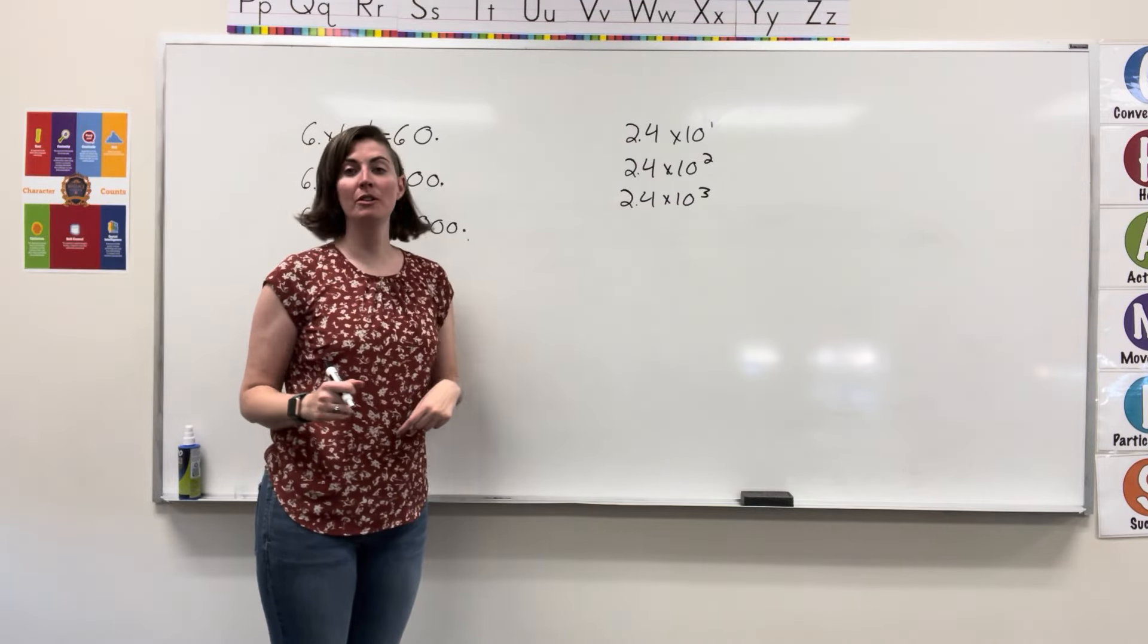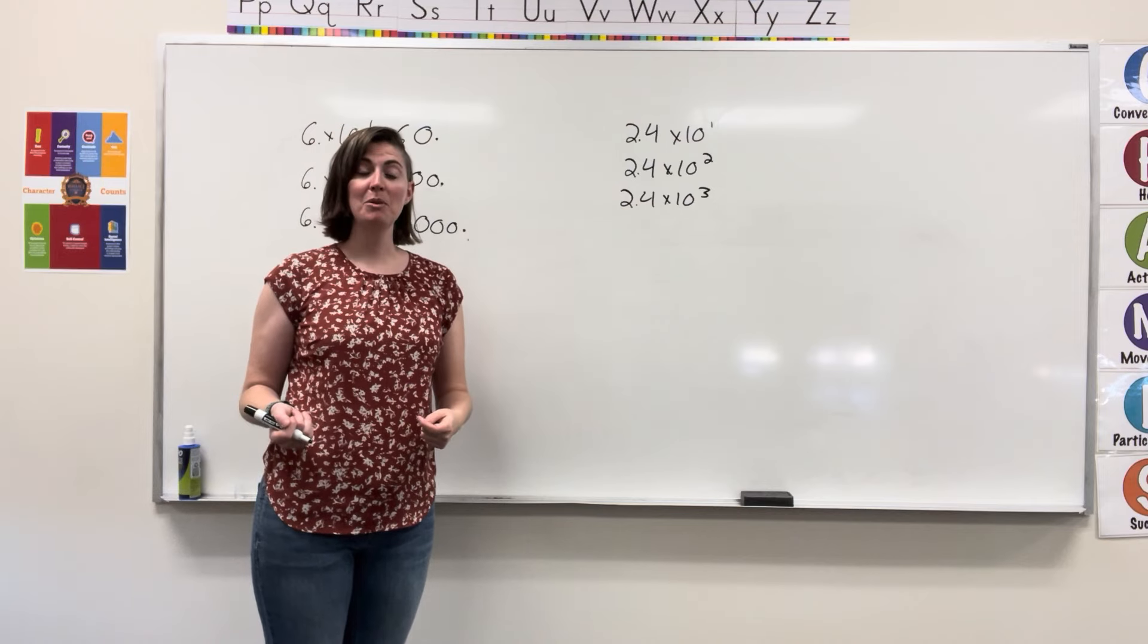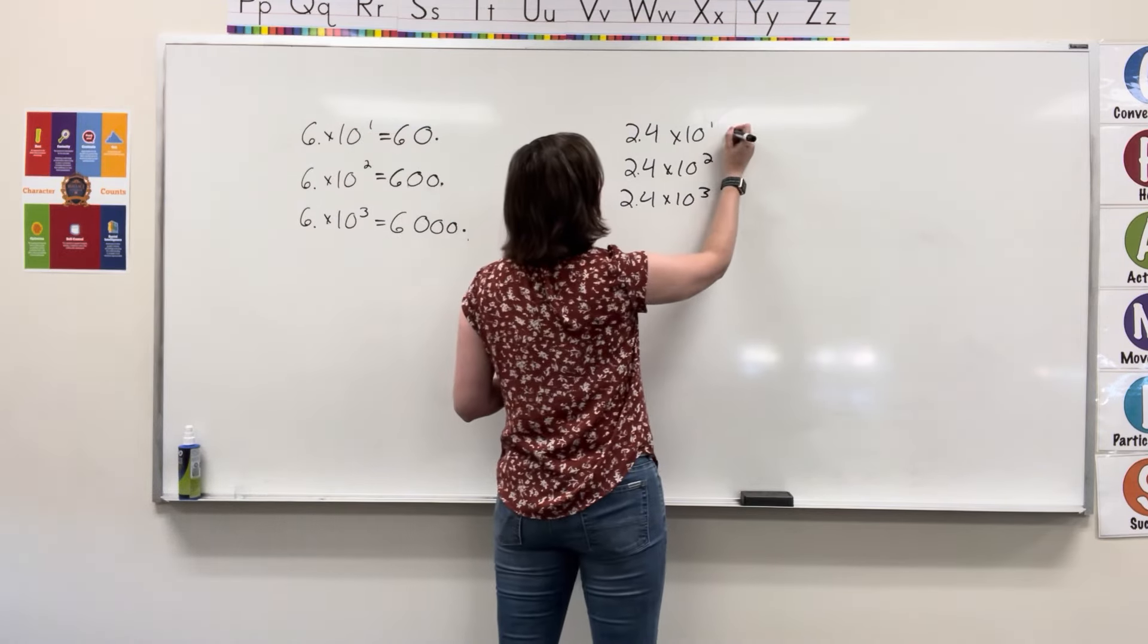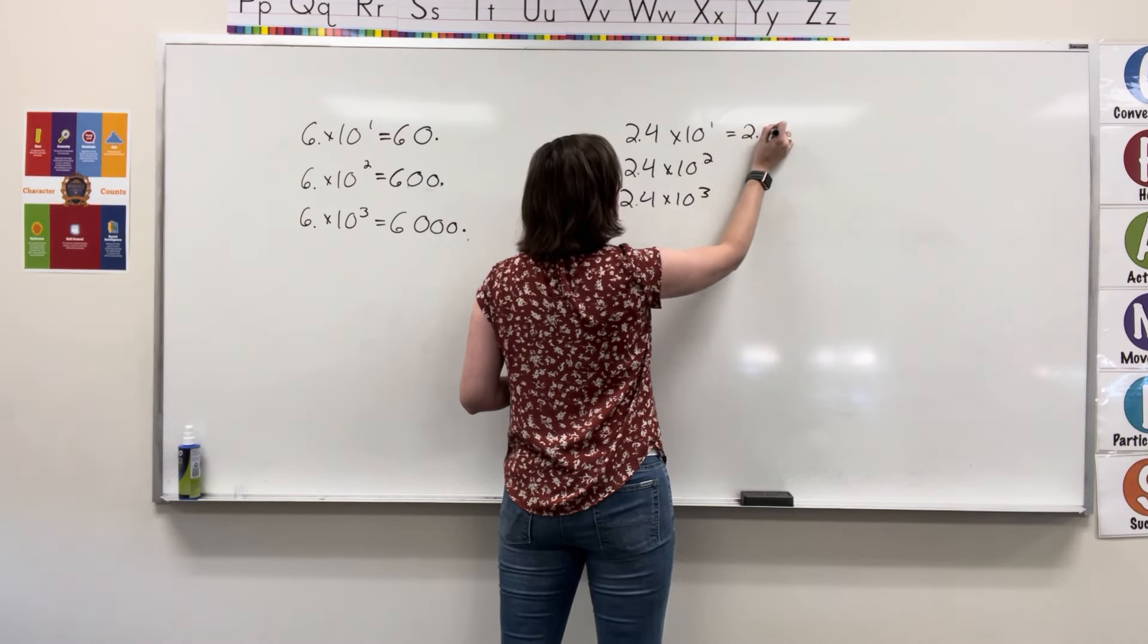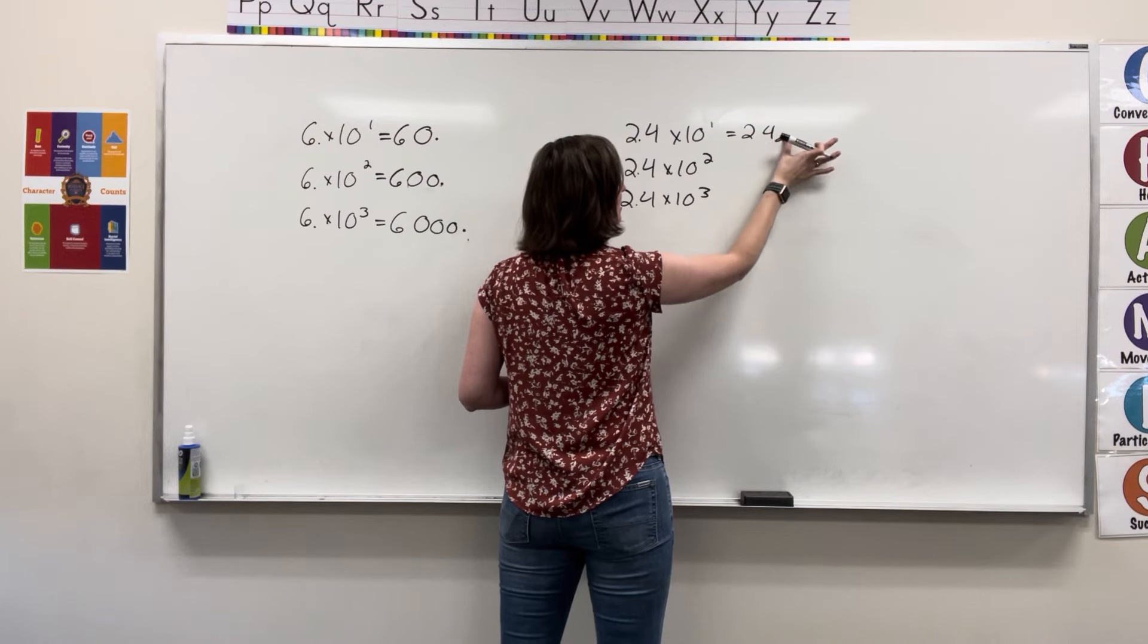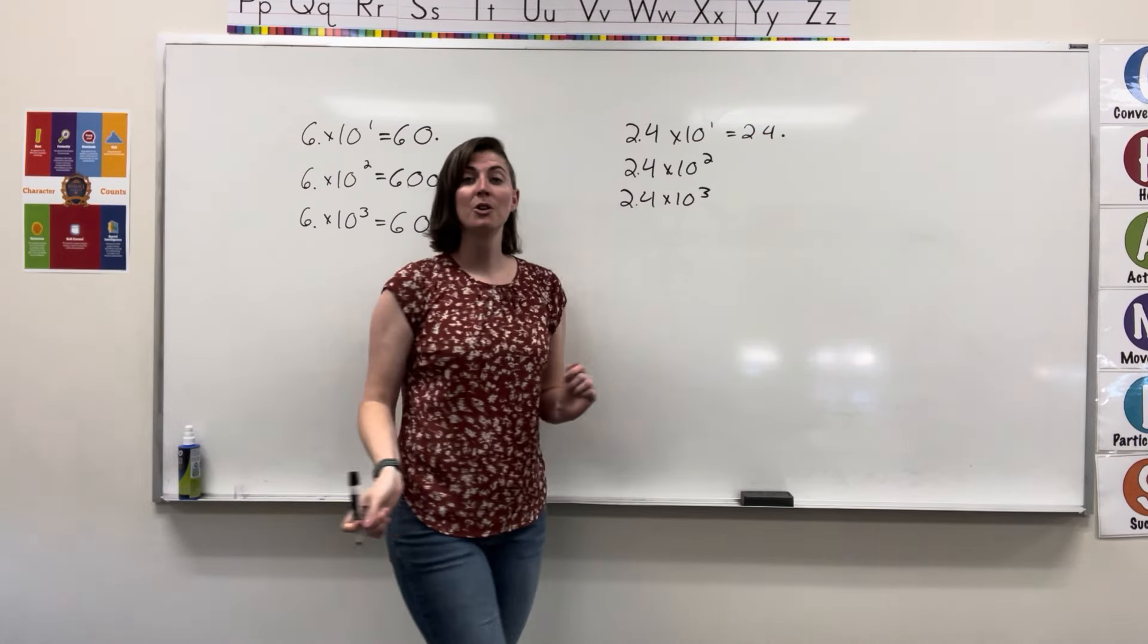So, looking at 2.4 tenths times 10 to the power of 1, I'm going to be moving that decimal one place to the right because we're multiplying. I move it one place to the right. My number is now 24.